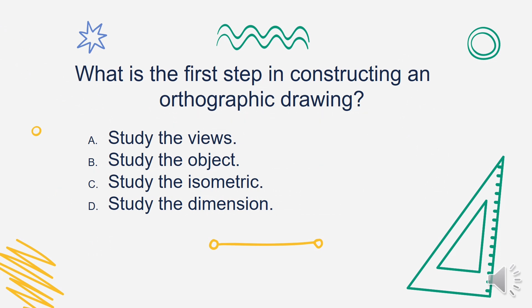What is the first step in constructing an orthographic drawing? Is it A. Study the views, B. Study the object, C. Study the isometric, or D. Study the dimension? What's your answer? Okay, the correct answer is Letter B. Study the object.